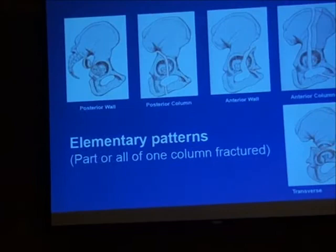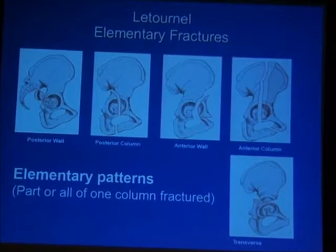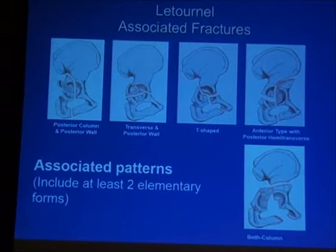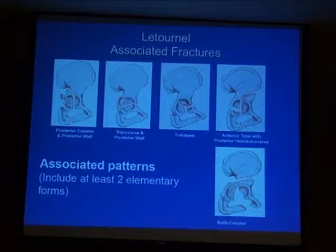Elementary fractures include posterior injuries like posterior wall and posterior column, or anterior injuries like anterior wall and anterior column, or the transverse type that interrupts both. More complicated fractures include posterior column plus posterior wall, transverse plus posterior wall, T-shaped, anterior with posterior hemitransverse, and both column fractures. You should diagnose and classify these fractures.